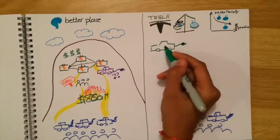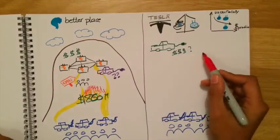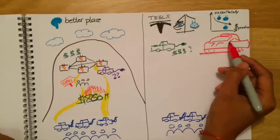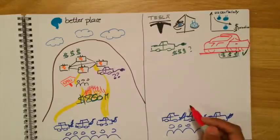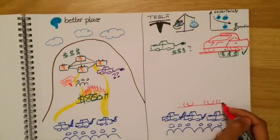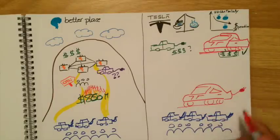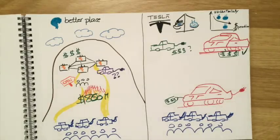Tesla doesn't know if people are willing to purchase expensive electric cars. But it knows that people are willing to spend money on luxurious sports cars. It's a fact we see it every day. So in order to justify its price tag, Tesla created an electric sports car that costs about the same as a regular sports car.